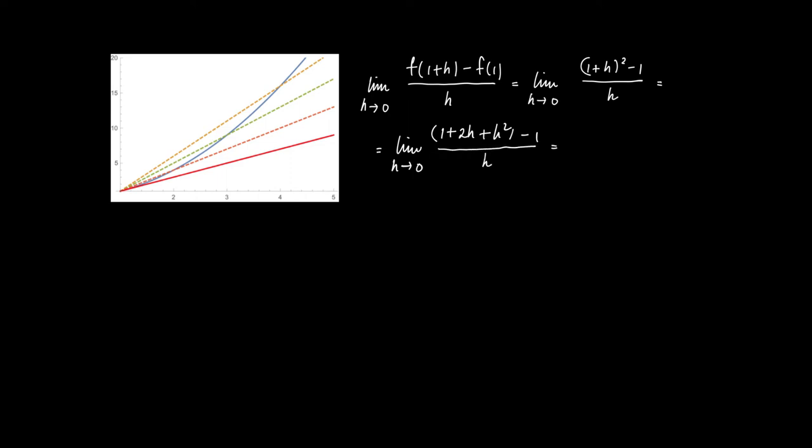So, now we see that the numerator actually takes a more simple form, and we may divide by h, and we get 2 + h, of which the limit for h to 0, of course, equals 2.